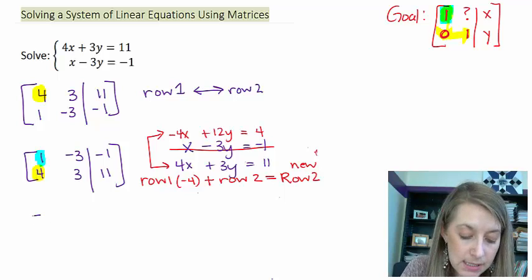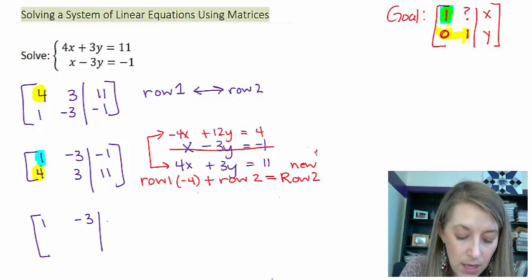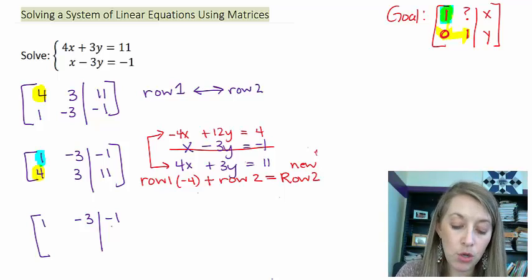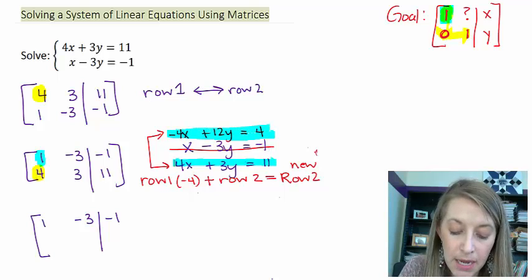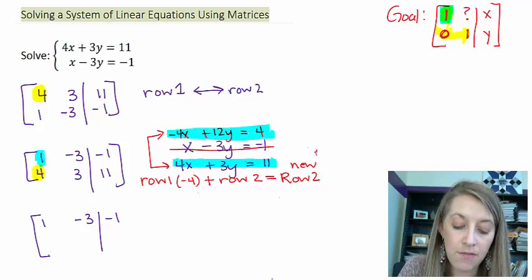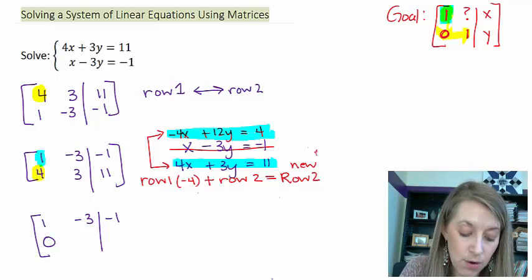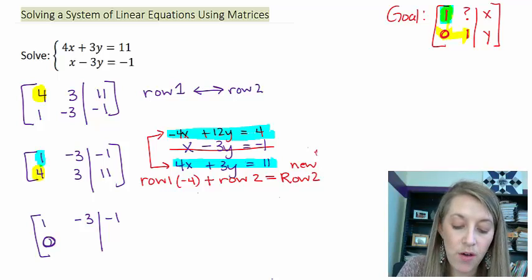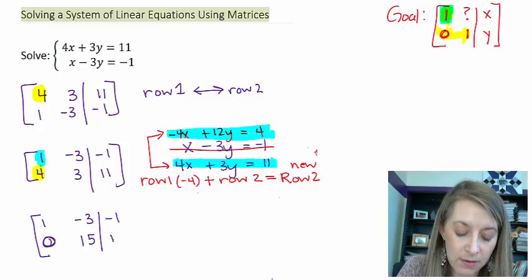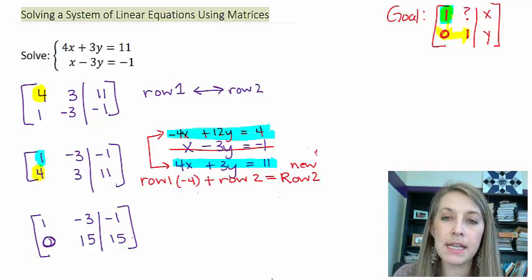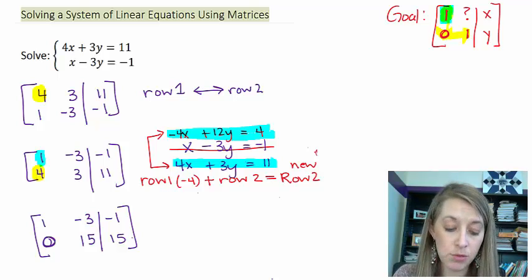So my row 1 stays the same, my 1, negative 3, negative 1. And my new row 2 becomes from when I add these two together and I should be eliminating a variable. Negative 4x plus 4x does give me a 0x. 12y plus 3y gives me a 15y. And 4 plus 11 gives me 15. So I'm doing the exact same thing that I would be doing in my elimination method, except for I'm not using the x's and the y's and the equal sign. I'm just using the numbers that I see out here in front.